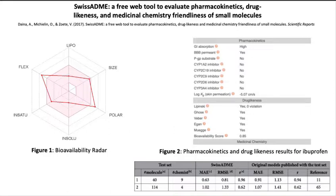In drug discovery, large numbers of compounds are often screened, and certain parameters need to be evaluated in order to determine which of those screened molecules would have favorable pharmacokinetics in an organism. The most common descriptors of pharmacokinetics are absorption, distribution, metabolism, and excretion, commonly known as ADME. Often these are measured with wet lab assays in a more rigorous fashion, but when you have a large compound library or you're doing computational experiments, it's desirable to just do virtual screening.